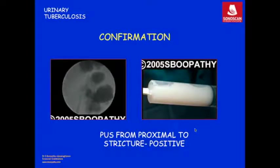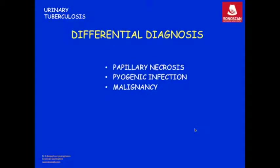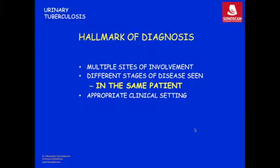The differential diagnosis includes papillary necrosis, pyogenic infection, and malignancy — all of which can mimic the appearances described in tuberculosis. The hallmark of diagnosis of tuberculosis is involvement of multiple sites of the urinary tract and different stages of the disease — granuloma, fibrosis, cavitation, and calcification — all seen in the same patient.